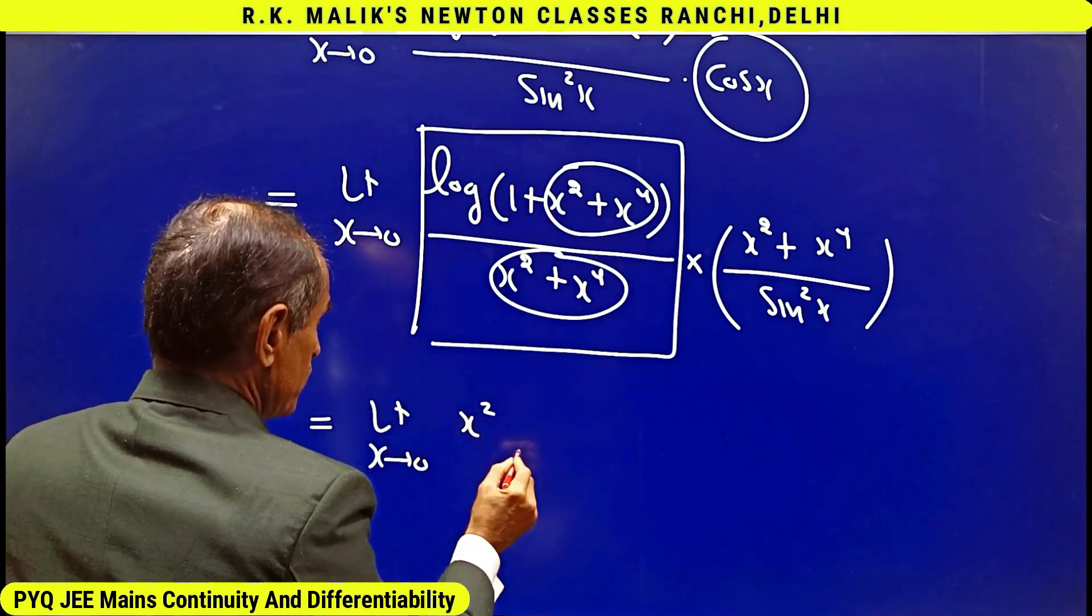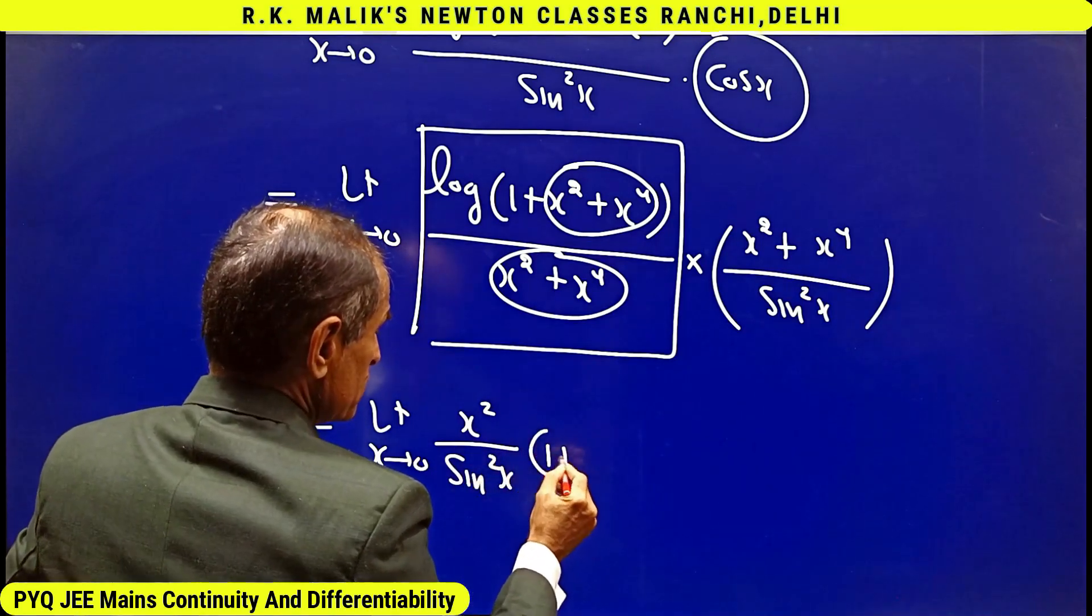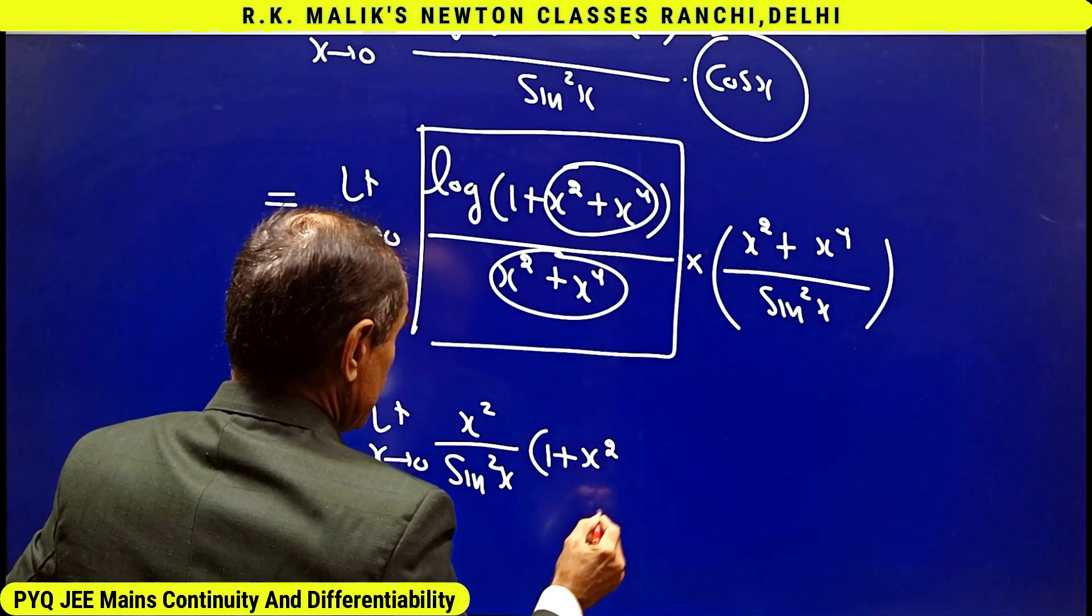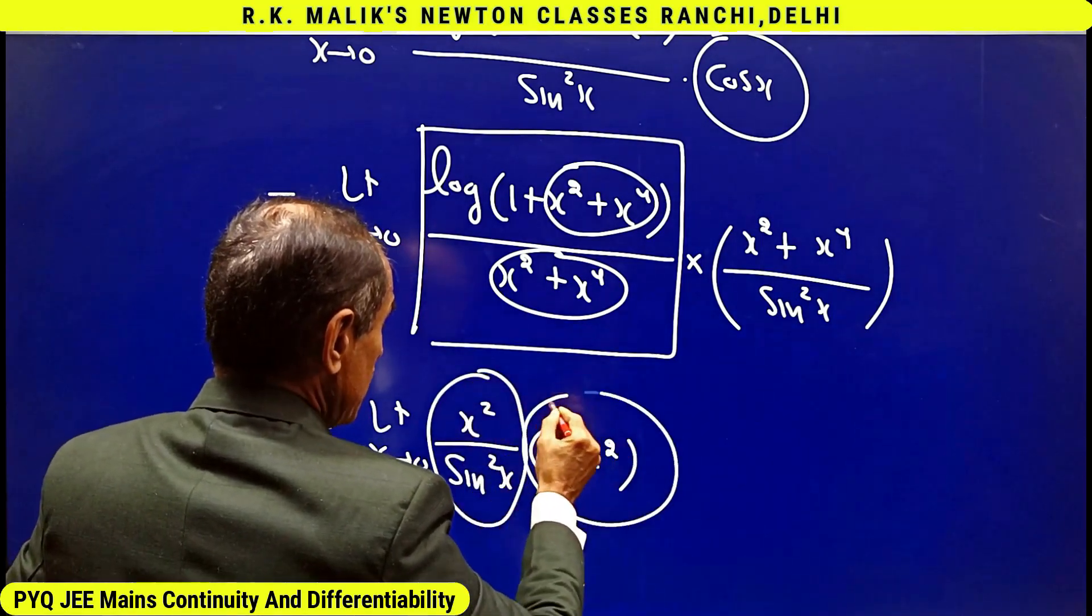x² upon sin²x times (1 + x²). The limit of this is 1, the limit of this is also 1.